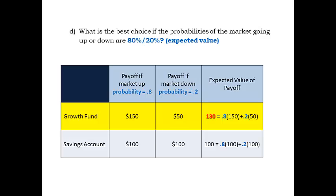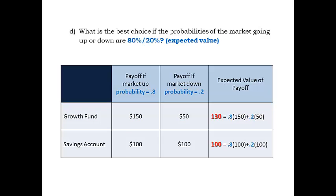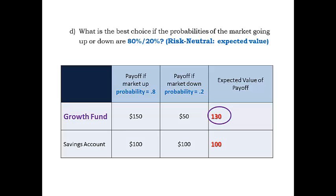In our example, for the growth fund, the weights are the probabilities of 80% and 20%, and the payoffs are $150 and $50. So the weighted average is 80% × 150 + 20% × 50, giving an expected value of $130. Comparing the expected values for each alternative, the decision maker chooses the best. For our example, the growth fund has the best expected value given 80% up and 20% down probabilities. A risk-neutral decision maker chooses the alternative whose expected value is best, based on the known probabilities.